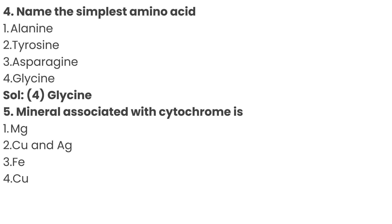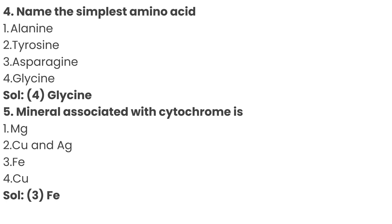Question number 5: mineral associated with cytochrome is? Option 1: Magnesium, Option 2: Copper and Silver, Option 3: Iron, Option 4: Copper. The correct answer is Option 3: Iron (Fe).